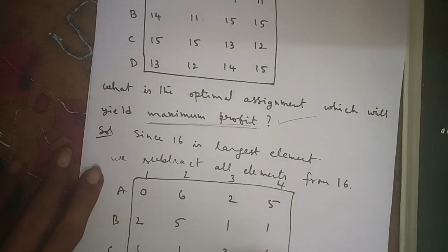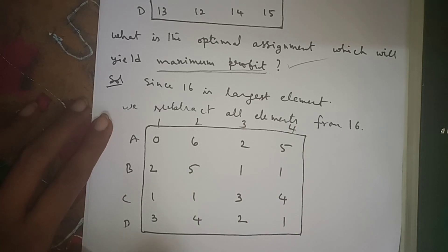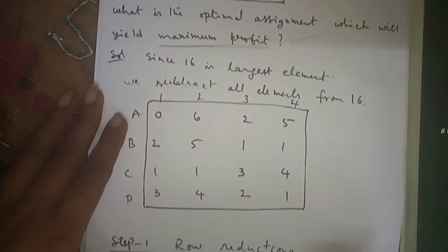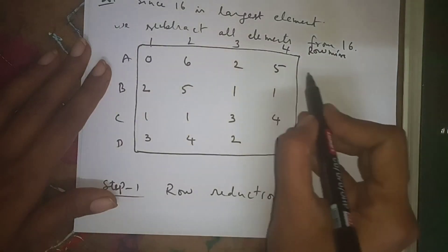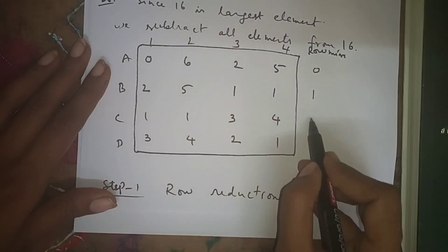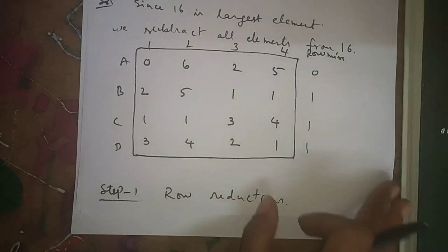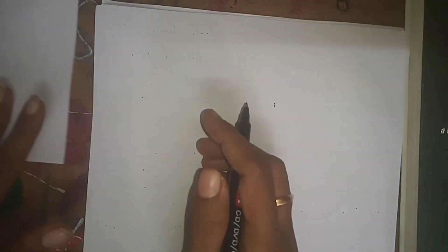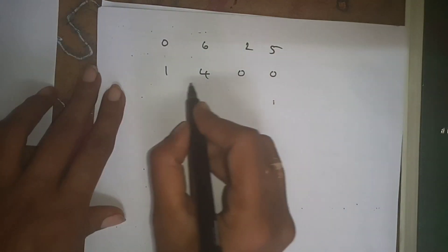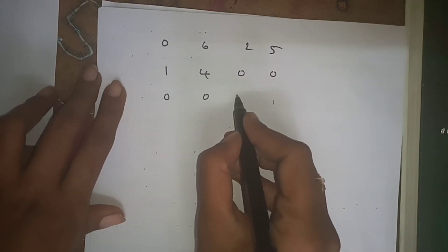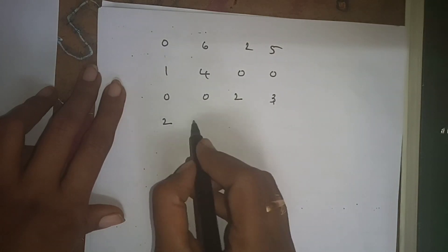Now from this new table, we apply the usual Hungarian method. Step 1 is row reduction. We find the row minima: the minimum element in the first row is zero, minimum one, minimum one, minimum one. After performing row reductions, we get the reduced table.